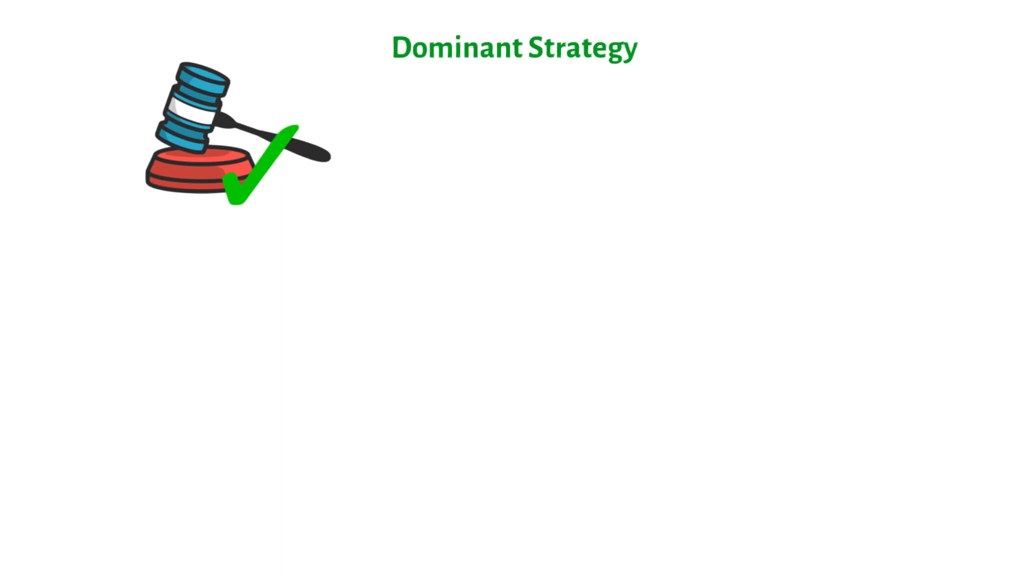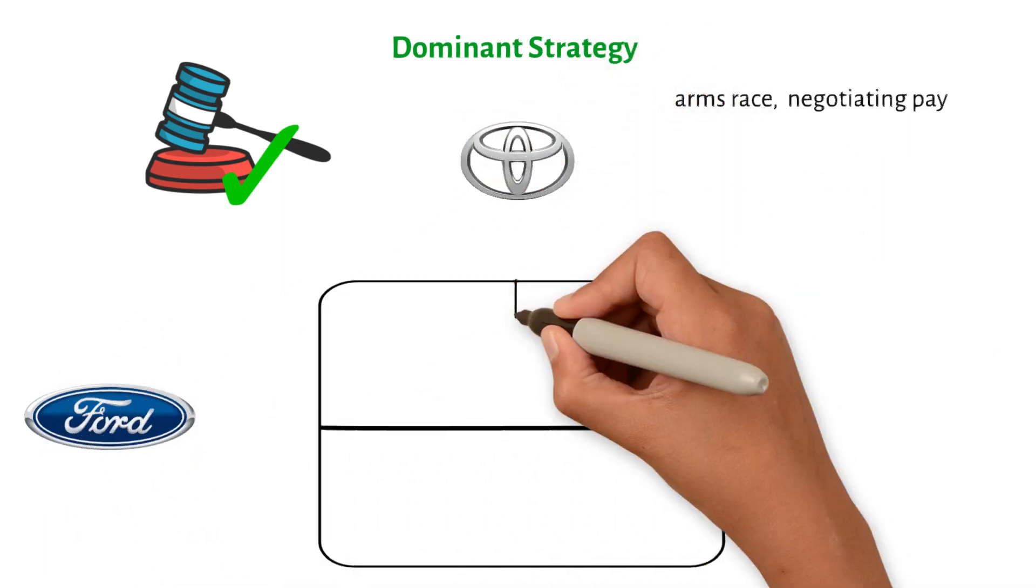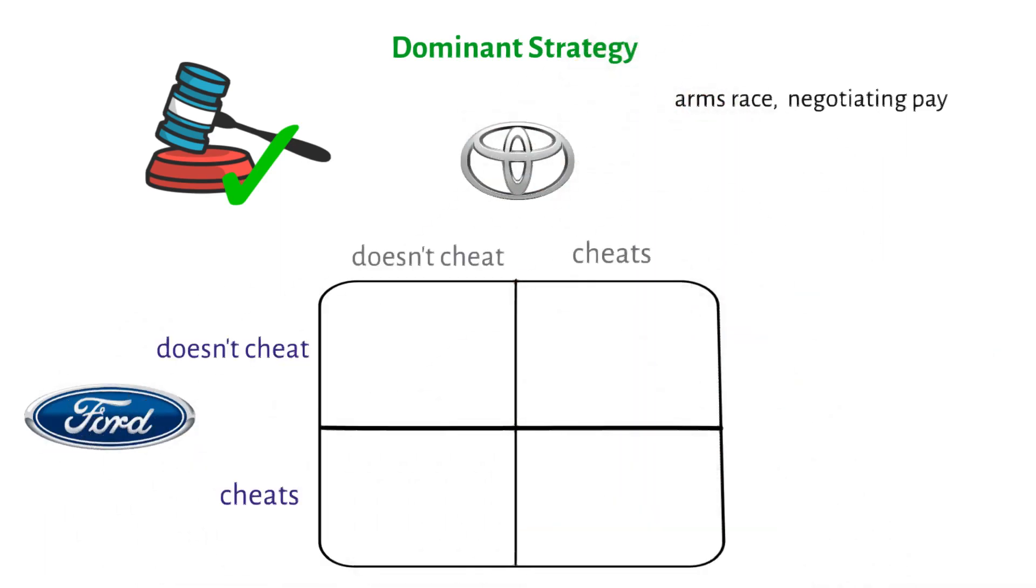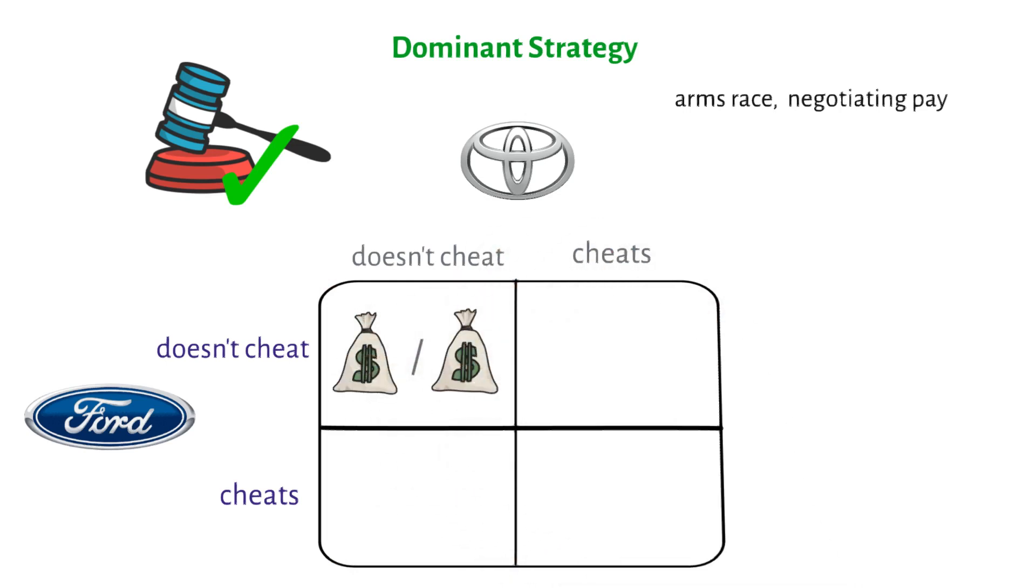This theory can be used to describe thousands of situations that do or could happen, like an arms race or negotiating pay. The prisoner's dilemma is like business situations that really happen. Think about a country where only Ford and Toyota make cars. They both agree to sell a certain number of cars in that country, and as long as neither of them cheats the other, they will both make a lot of money.